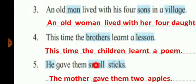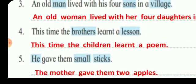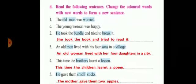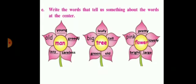He gave them small sticks. We have to change 'small sticks' and 'he.' So instead of 'he' we write 'the mother,' and instead of 'small sticks' we write 'two apples' — 'The mother gave them two apples.' You have to write it down in your book only.